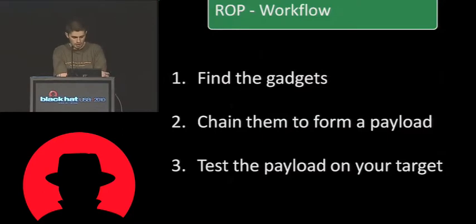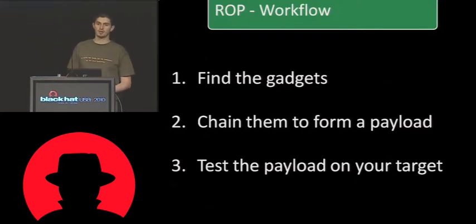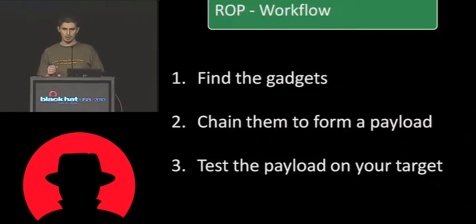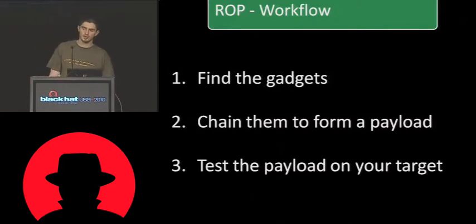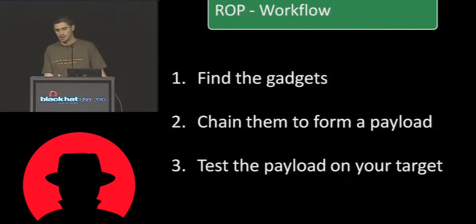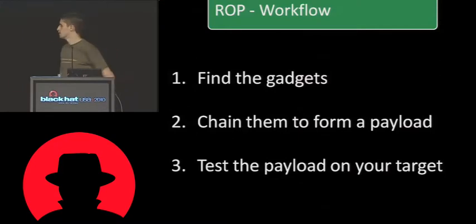On most mobile platforms nowadays, you don't have address space layout randomization. This means that you can basically find gadgets in every library and in every main executable in the address space. This makes things way easier for us, because we have a lot of available gadgets to use. Now Tim is going to explain how to find gadgets in a given executable, Ralph is going to explain how to chain them together, and I will finally show you how to test your payload. Tim.